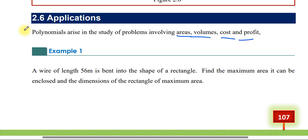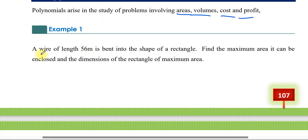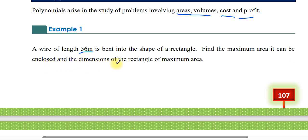So let us see the first example. A wire of length 56 meters is bent into the shape of a rectangle. Find the dimensions of the rectangle of maximum area.